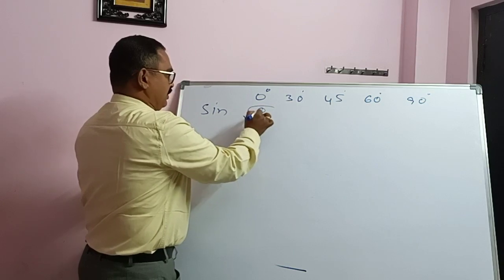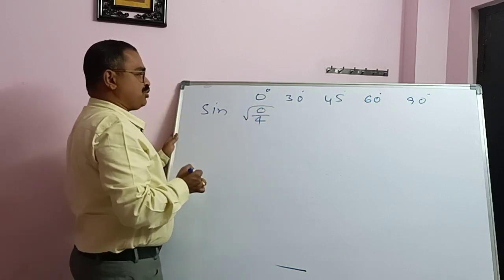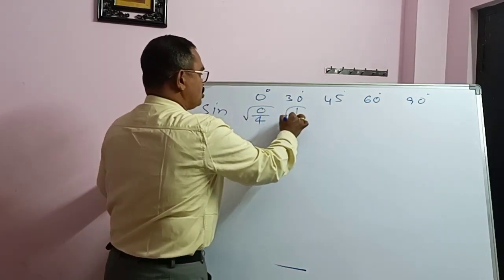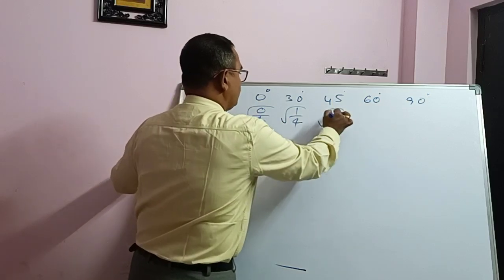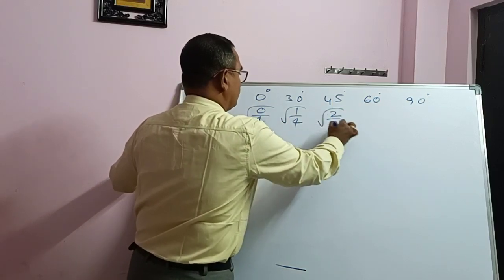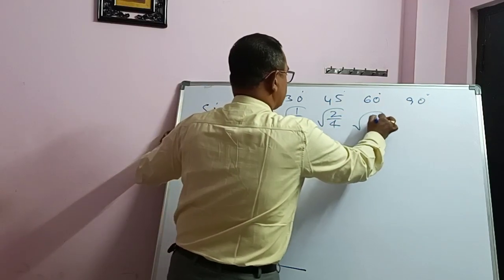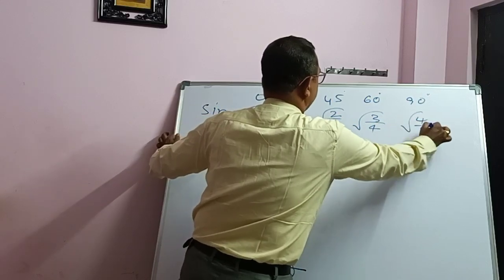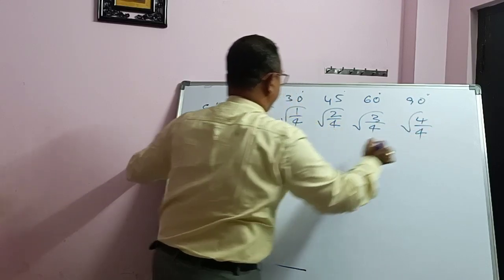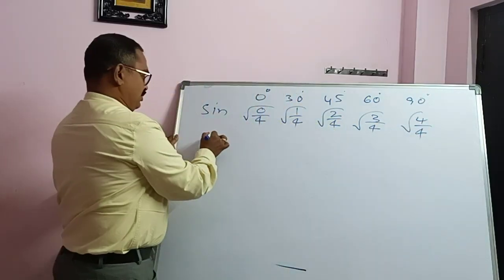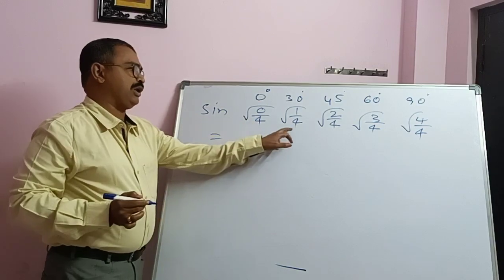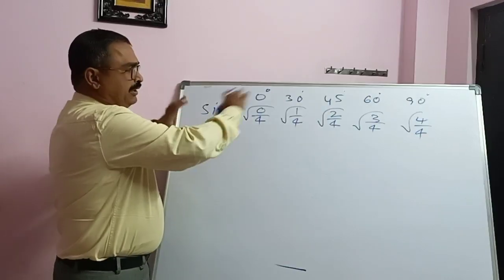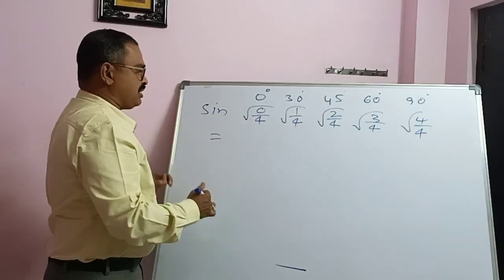Let us start with square root of 0 by 4, square root of 1 by 4, square root of 2 by 4, square root of 3 by 4, and square root of 4 by 4. If we can find out the values of these five, we can draw the entire table very easily.